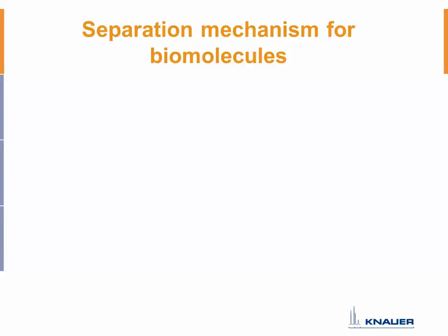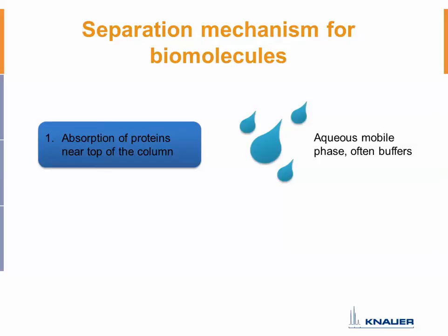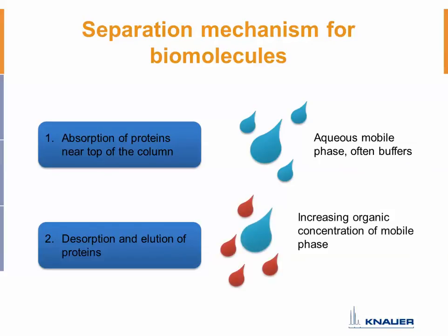The separation mechanism for biomolecules is actually a straightforward one — not as complex as in other application areas. Basically, there is first a step of adsorption of your proteins near the column head, the top of the column. You typically use aqueous mobile phases here, often with some buffers and a large amount of water. In the second step, you desorb and elute the proteins from the column head by increasing the organic concentration of the mobile phase. It is a simple gradient, and usually not much organic content is needed to flush the proteins out. So the methods here are most often not complicated.